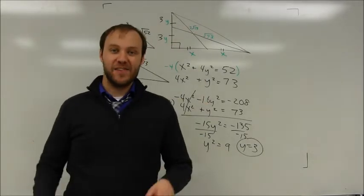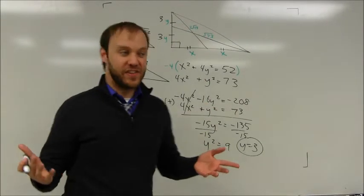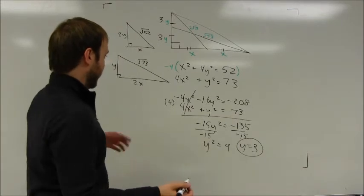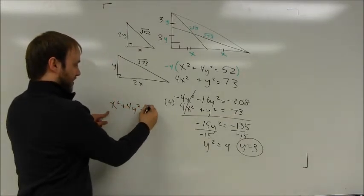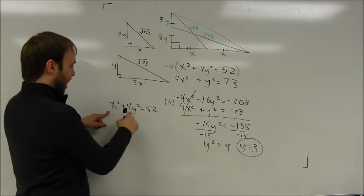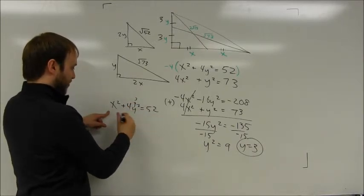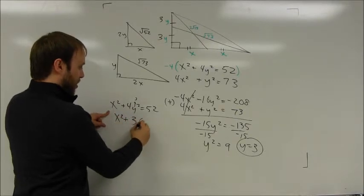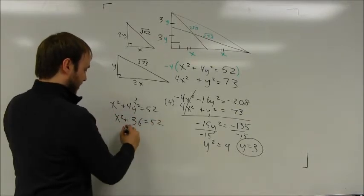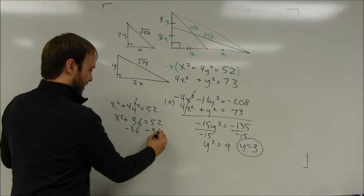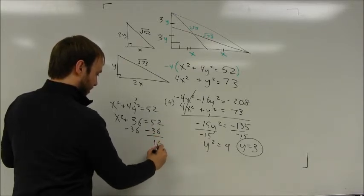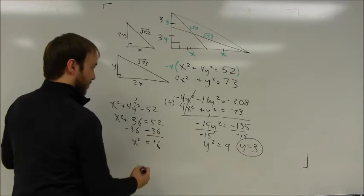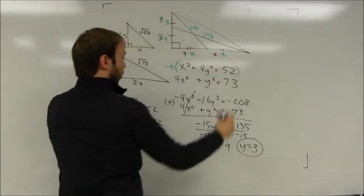If I want to go back and find x, I can just substitute in any of the equations that I've already written. So for example, I know that x² + 4y² = 52. I know that y is 3. 3² is 9 times 4 is 36. So x² + 36 = 52. I can subtract 36 from both sides. And I'm going to end up getting an answer of 16 = x², meaning that x is going to have a length of 4.